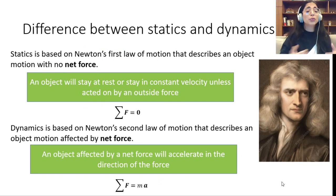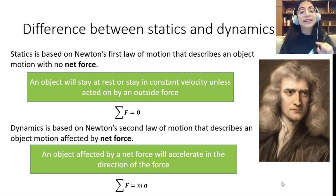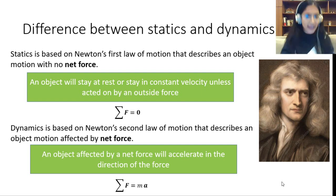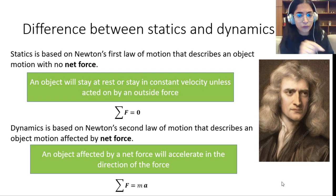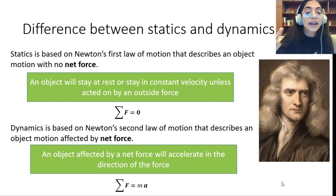This is the difference between statics and dynamics. In statics, we deal with Newton's first law, which states that any object will stay at rest or at constant velocity unless acted on by an outside force. This first law of motion describes an object with no net force — that is the case of statics. However, if this object is affected by a net force like the basketball, then this net force will cause the acceleration of the object in the direction of the force, and this is the case of dynamics.